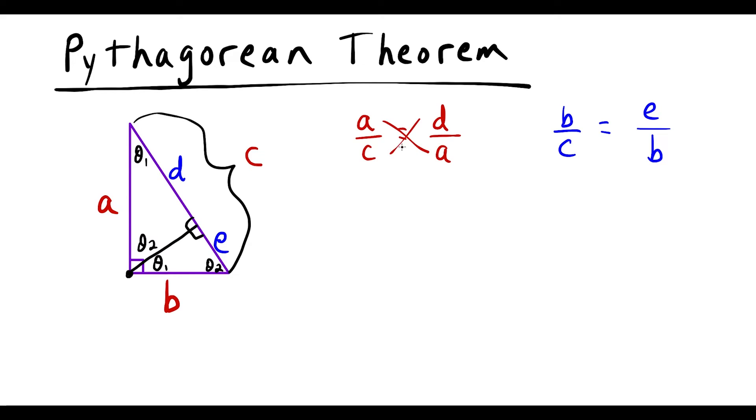So now what we're going to do is we're actually going to cross multiply like this. And this is going to give us a squared equals c times d. But then when we repeat this process in the second proportion we have b times b is b squared. And that's going to be equal to c times e. So now what I want to do is I'm going to actually add these equations together.